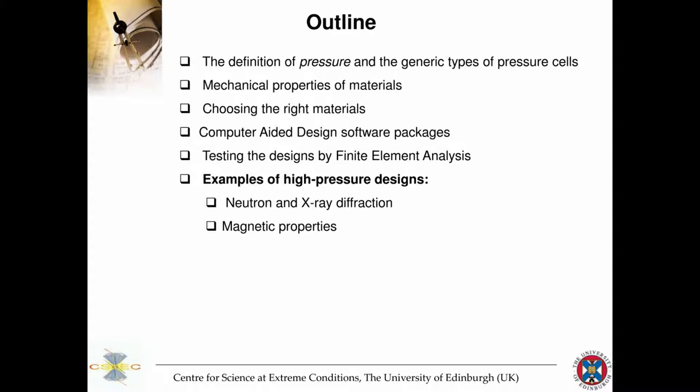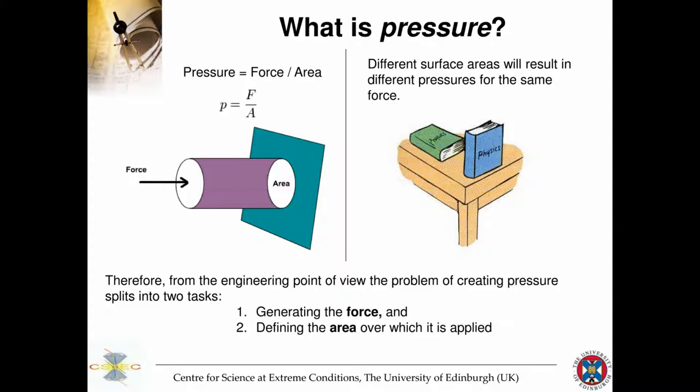I'll start by defining pressure. Pressure is force divided by area. Depending on how the area is defined, the same force applied to the same book can produce higher or lower pressure. From an engineering point of view, designing a pressure cell falls into two parts: generating the force, and defining the pressure area to which that force is applied. Everyone understands that the higher the force and the smaller the area, the larger the pressure that can be achieved.